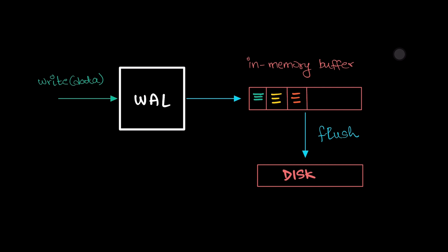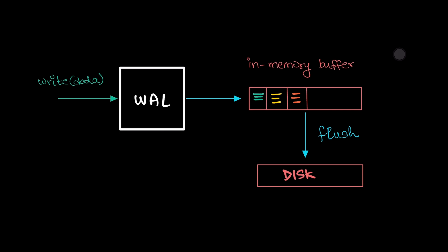Since WALs typically serve as auxiliary data structures to primary systems like databases, their performance should not impede the overall system. To optimize write operations, WALs often use an in-memory buffer for temporarily storing incoming writes. This approach enhances write speed at the cost of some durability. The flushing interval for a WAL can vary, often set to a few hundred milliseconds, but this is generally adjusted according to the specific requirements of the application.